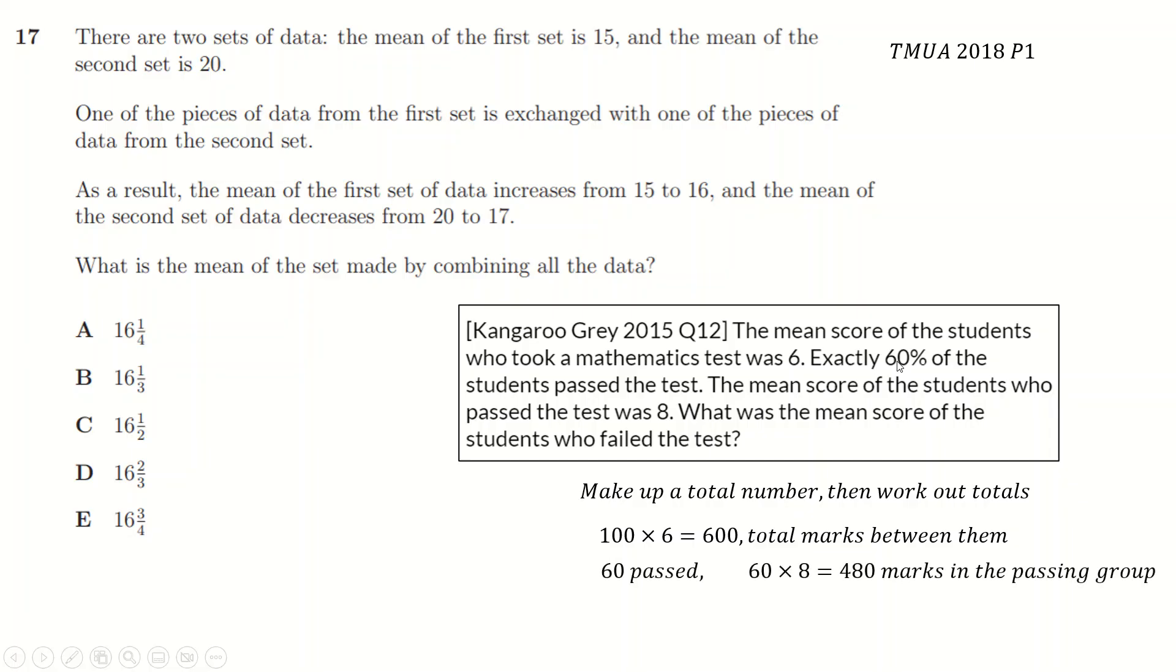60 of them passed. That means 60 students passed. Mean of them was 8, so 60 times 8. That's the number of passing students times the marks they got is 480 marks in the passing group. Take these away to get 120 marks in the failing group between 40 people. Share them out, and you get an average of 3. So that's kind of interesting.